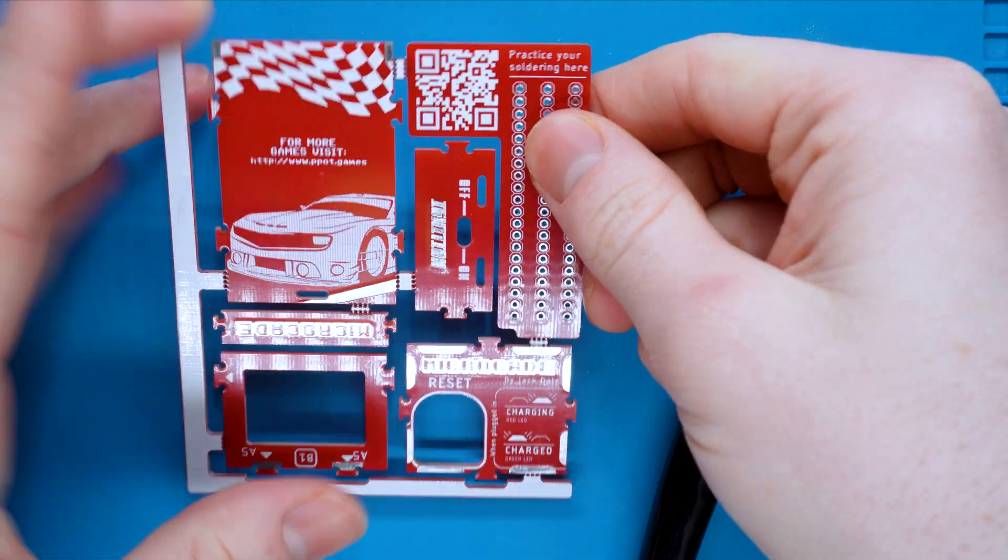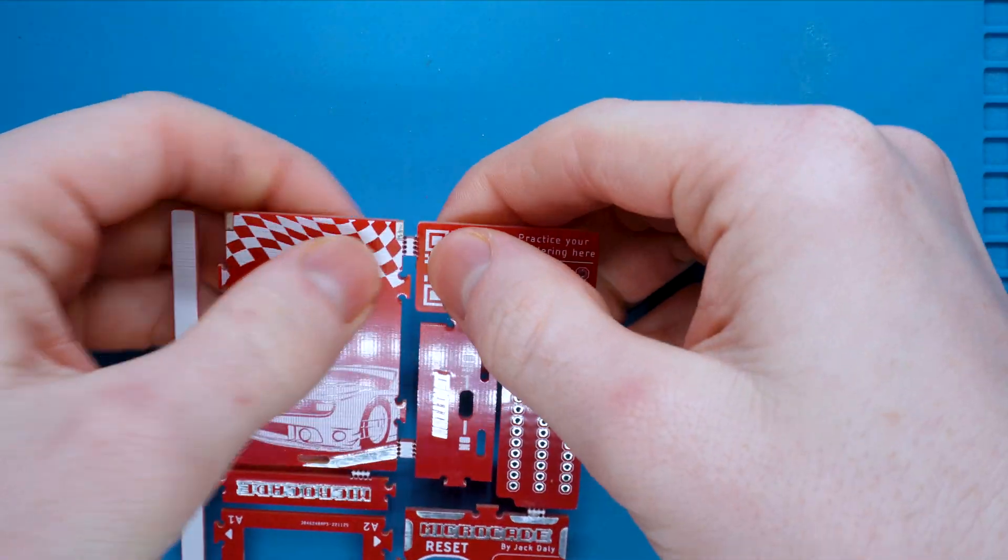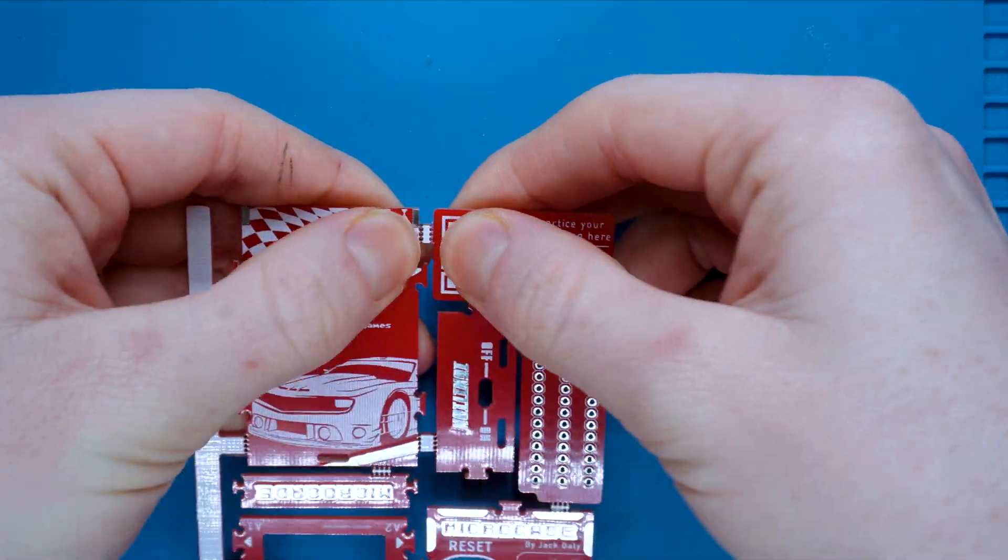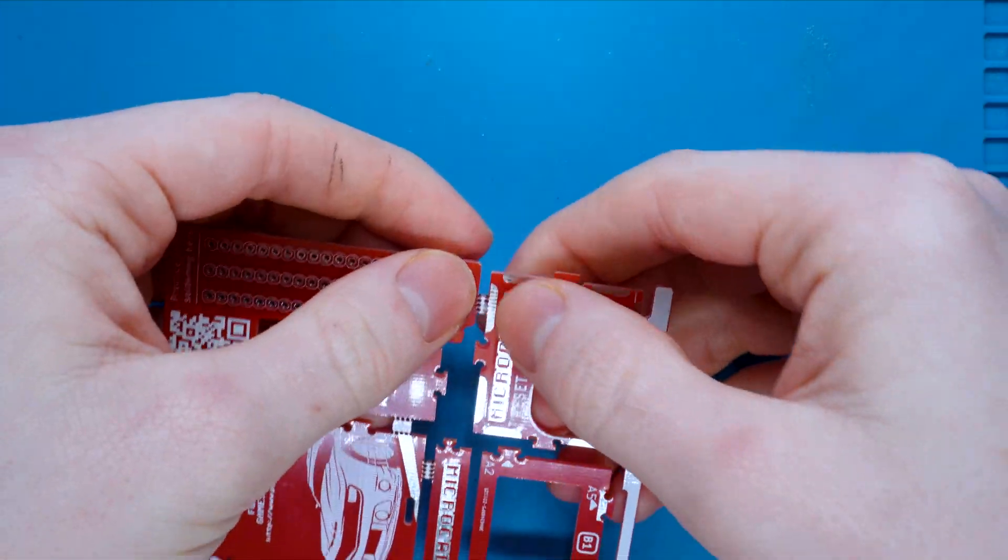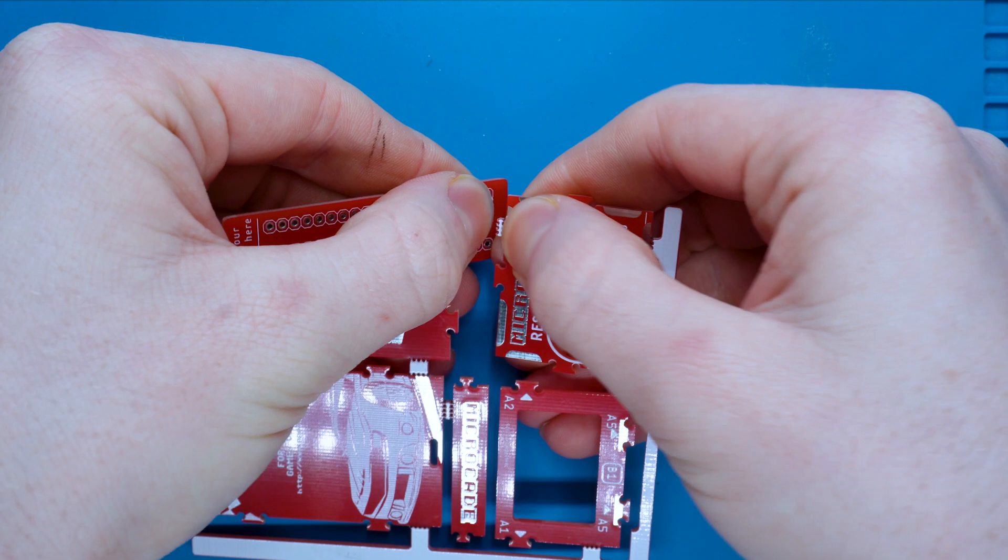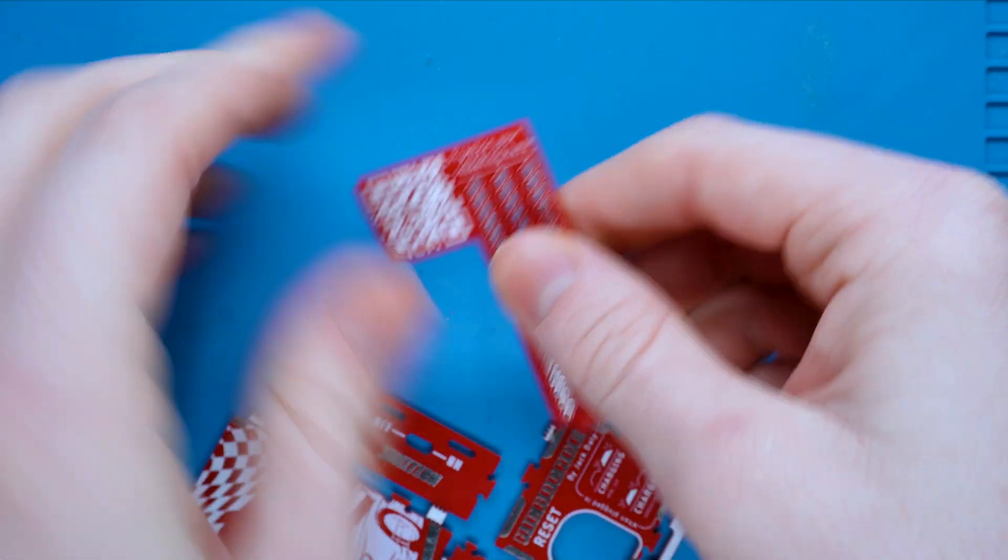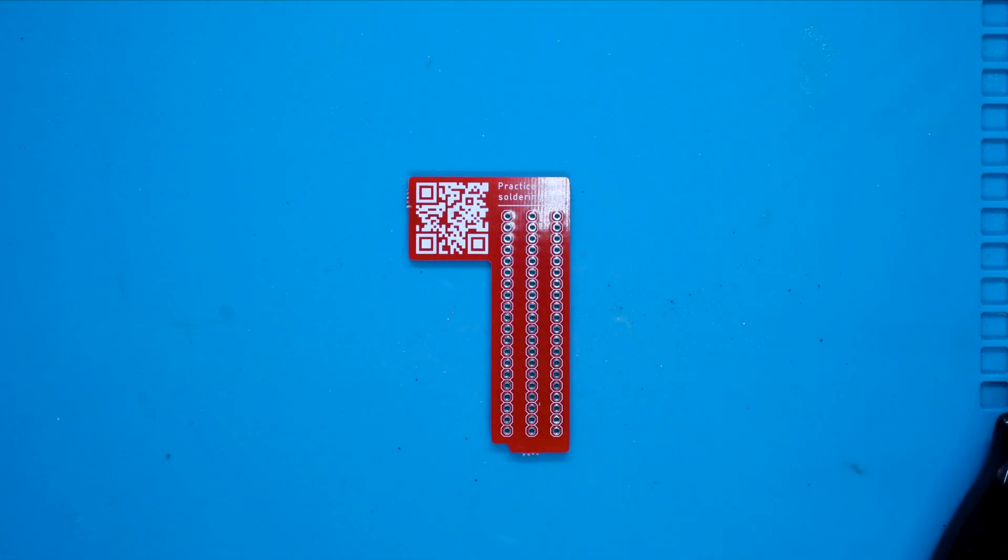To snap it off you just want to use your two thumbs to just pinch it slightly and twist it to snap it like so. Do this for both joints, and then once we're finished we can put panel two to the side and keep the practice soldering board.